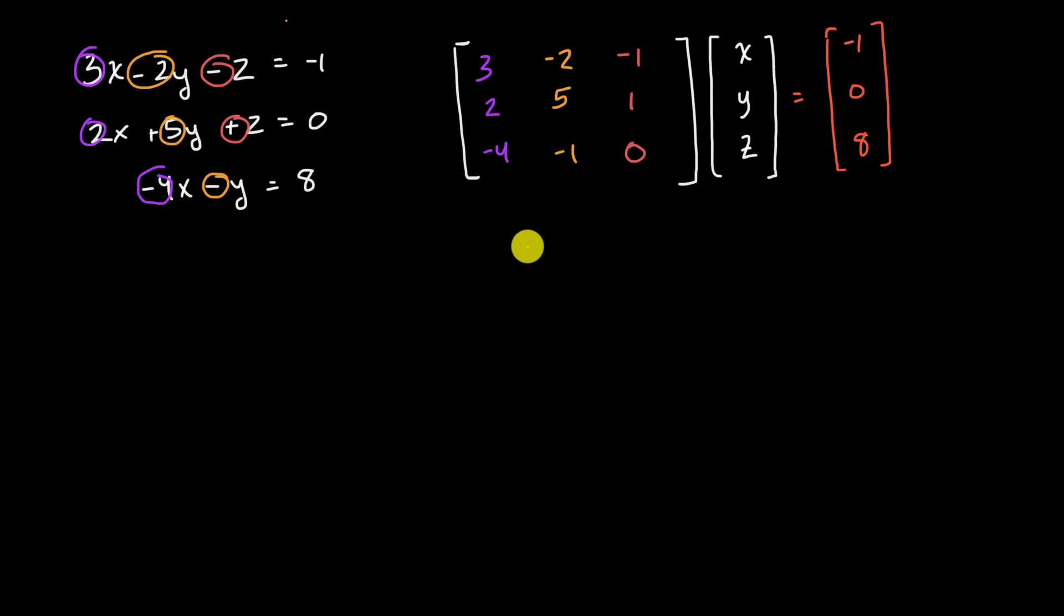And I know there's a lot of things going on in your brain right now. You're like, Sal, this looks somewhat magical. You just took the coefficients, put the X, Y, Zs here, put the right-hand sides of the equal sign, the sides that didn't have the variables on it, put it over here. Does this actually make sense? Does this actually work?